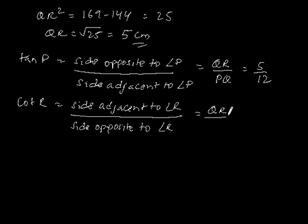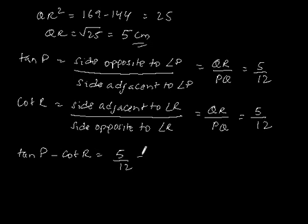Cot R equals QR by PQ, which also gives 5 by 12. So tan P minus cot R equals 5/12 minus 5/12, which gives 0, which is our answer.